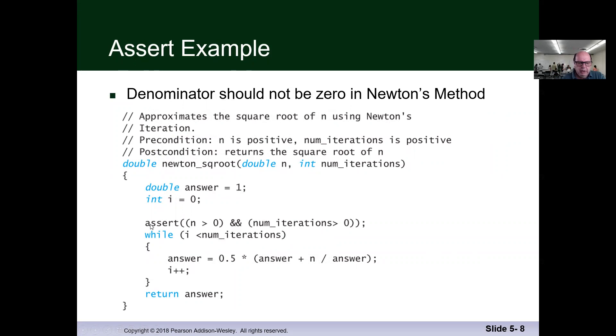So in here, we have this condition that if n greater than zero, and num iterations greater than zero, we just going to assert, meaning that if this condition happens, we're just going to close the program, we're going to get out.